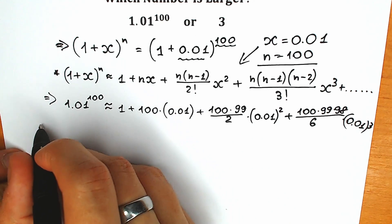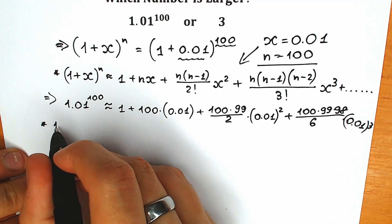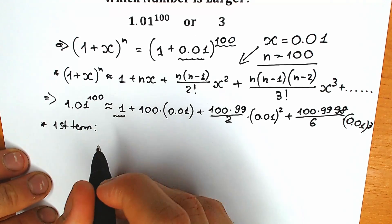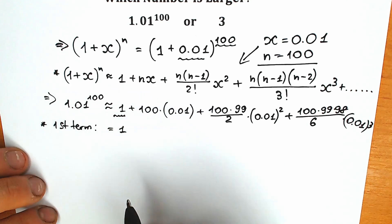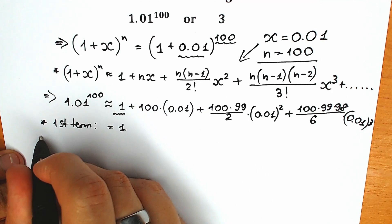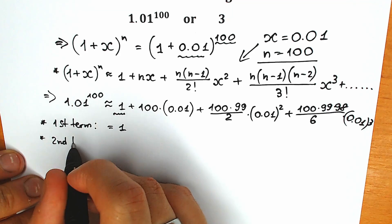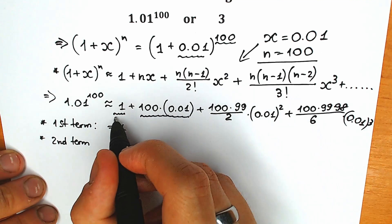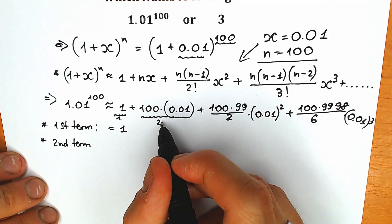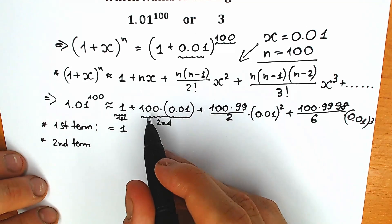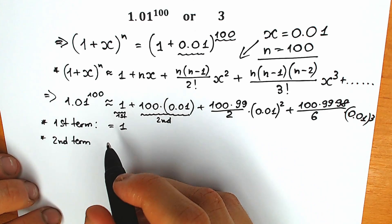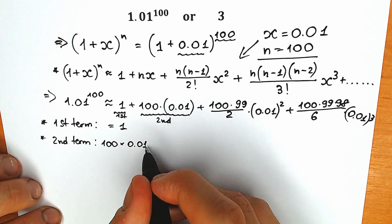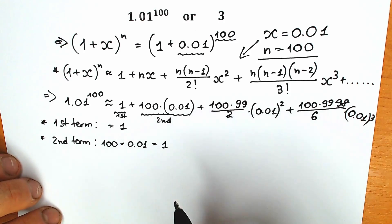The first term equals 1. The second term is 100 times 0.01, which equals 1. So our second term is equal to 1.